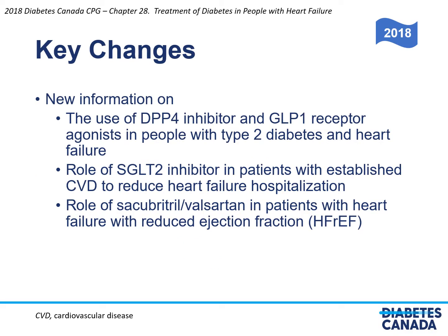Key changes in the 2018 heart failure update include new information on the use of DPP-4 inhibitors and GLP-1 receptor agonists in people with type 2 diabetes and heart failure. We'll discuss the role of SGLT2 inhibitors in patients with established cardiovascular disease to reduce heart failure hospitalization, and the role of Sacubitril-Valsartan combination therapy in patients with heart failure with reduced ejection fraction, defined as an ejection fraction less than 40%.